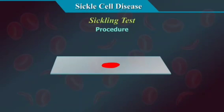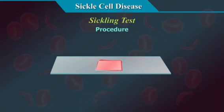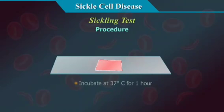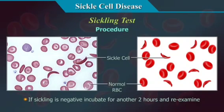Procedure: Place a small drop of fresh anticoagulated blood on a slide. Add one drop of reducing substance — sodium metabisulphide — and cover immediately with a cover slip. Seal the moist preparation with petroleum jelly or paraffin wax. Place in a wet chamber and incubate at 37°C for one hour. Examine under low and high power objectives of a microscope to look for sickling.